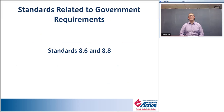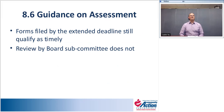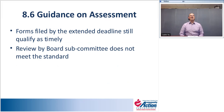Standard 8.6: The IRS Form 990 is completed annually and made available to the governing board for review. Forms filed by the extended deadline still qualify as timely — if you've asked for an extension and filed by that extended deadline, that will still qualify. Review by a board committee or subcommittee does not meet the standard; the 990 needs to be made available to the board as a whole.